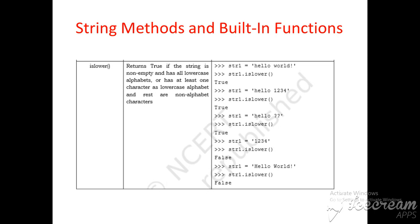islower() returns true if the string is non-empty and has all lowercase alphabets, or has at least one character as a lowercase alphabet and the rest are non-alphabet characters. For example, str1 is equal to 'hello world' with one special symbol at the end — str1.islower() returns true because it contains lowercase letters only. str1 equal to 'hello1234' also returns true because it contains small letters.